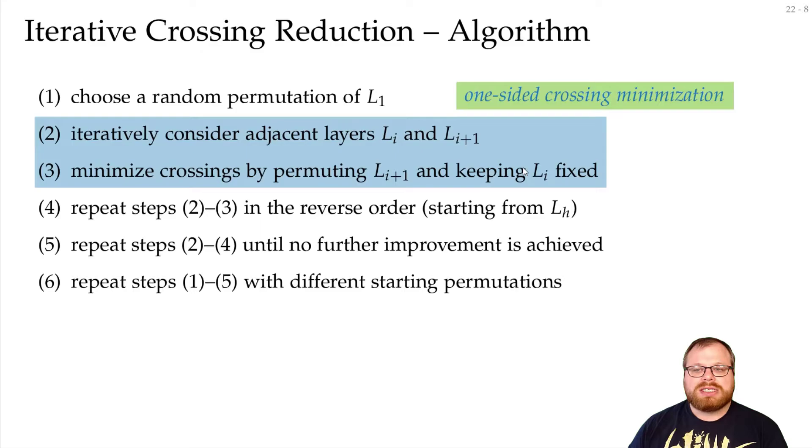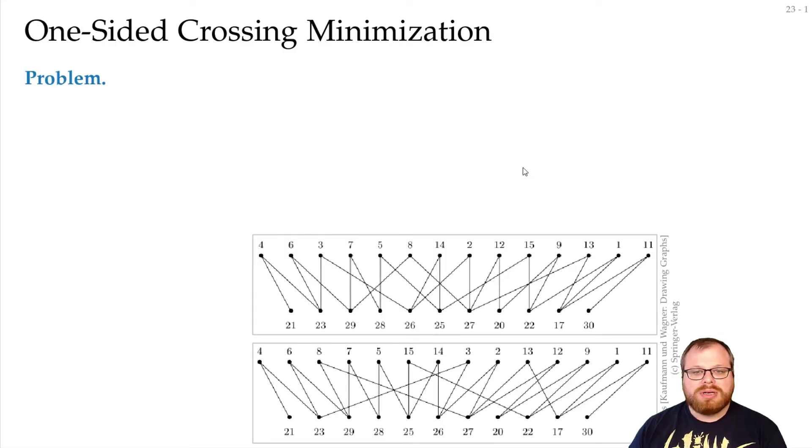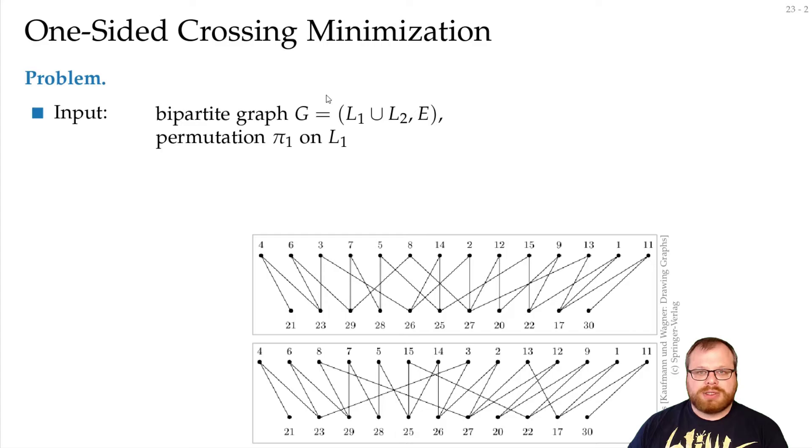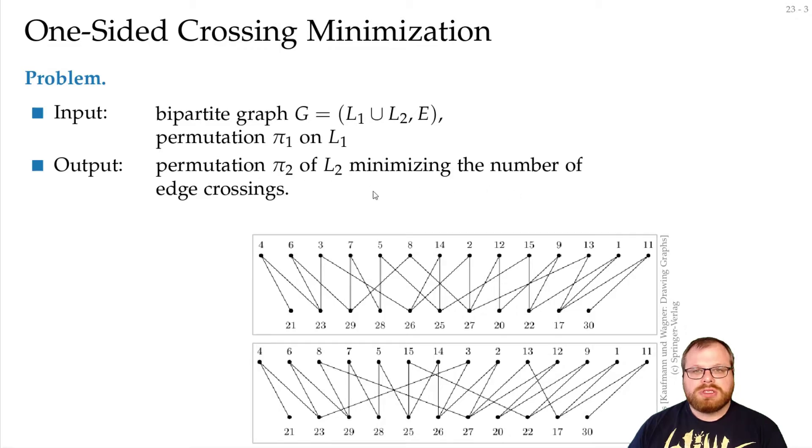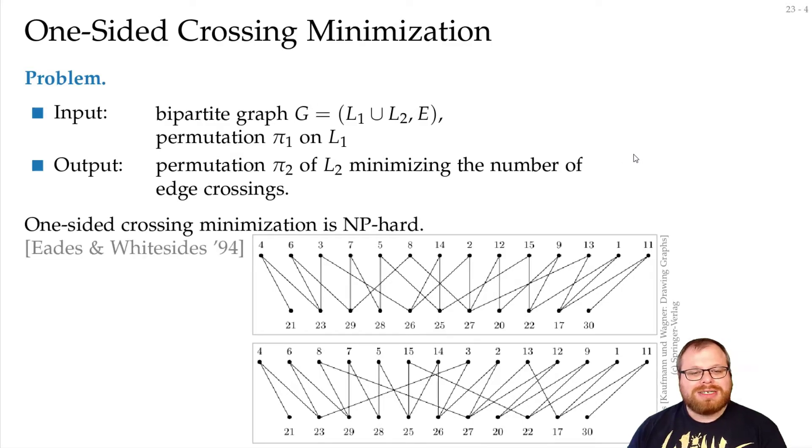The key part in this algorithm is: how can we minimize the crossings by permuting one layer and keeping the other fixed? This is the one-sided crossing minimization problem. The input is a bipartite graph with two sets of vertices L1 and L2, and we have a fixed permutation on L1. We can permute the second layer to minimize the number of edge crossings. Unfortunately, this problem is also NP-hard.